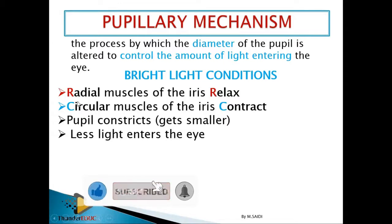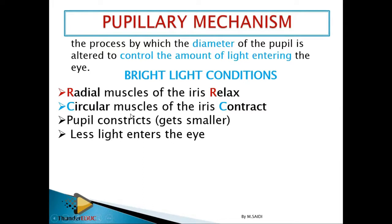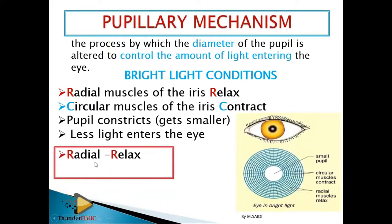Why are these ones in different color? I say that R goes with R, and C goes with C. R which is radial goes with relax, and C which is circular goes with contract. Circular muscles are called so because they are arranged in circles, and radial muscles are called so because they are like a radius.